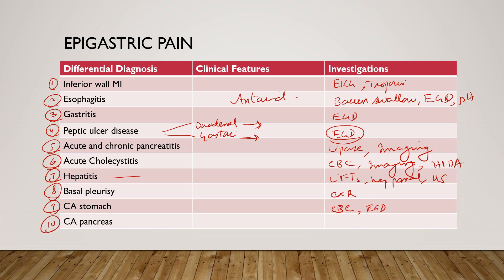Last is cancer of the pancreas. It can cause epigastric pain radiating towards the back, weight loss, and jaundice. Workup-wise, consider LFTs, ultrasound abdomen, CT abdomen, MRCP, and endoscopic ultrasound with biopsy can also be considered.